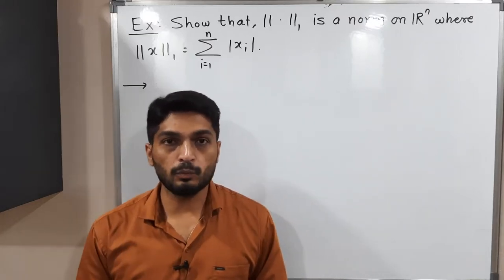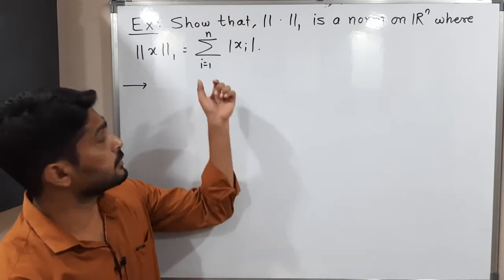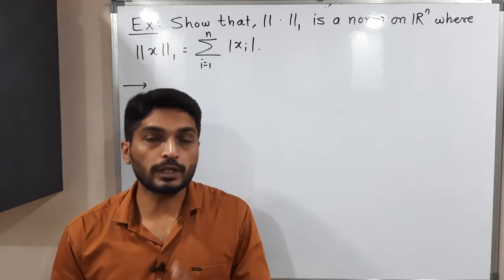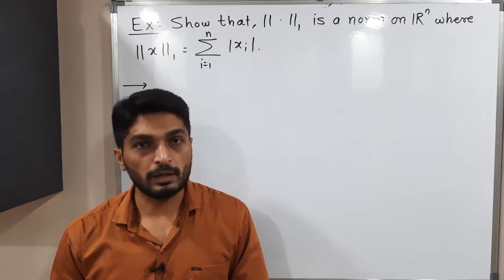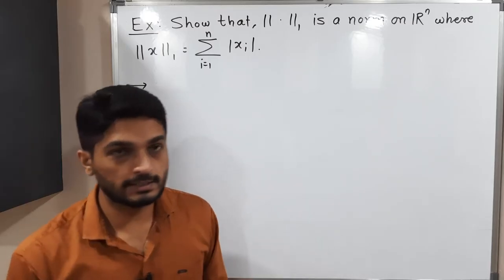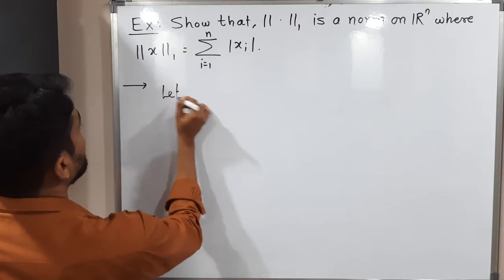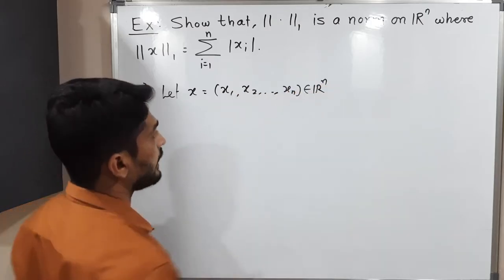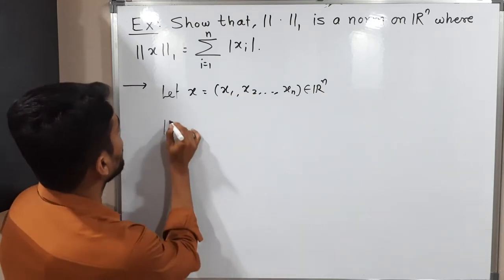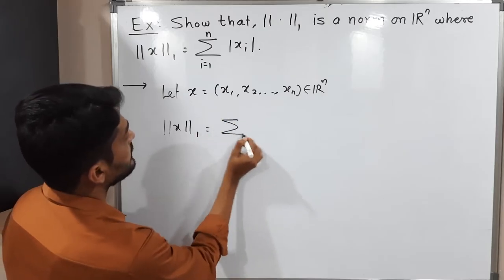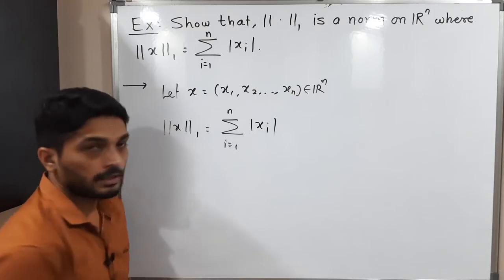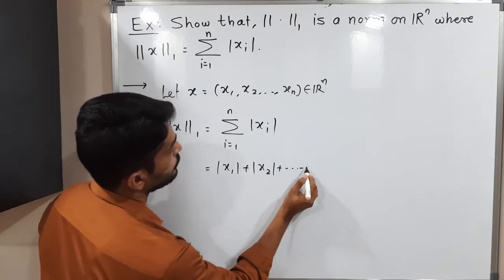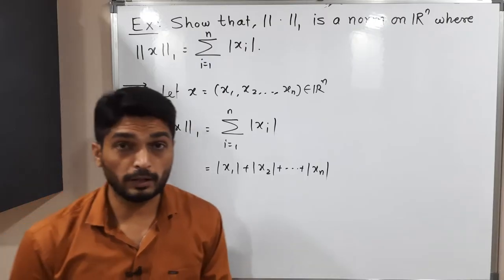Let us discuss this example. We have norm 1 which is defined on elements of ℝⁿ, and we have to prove it is a norm on ℝⁿ — that means it should satisfy four conditions. The definition of norm 1: for x = (x₁, x₂, ..., xₙ) ∈ ℝⁿ, norm₁(x) is defined as the summation from i=1 to n of |xᵢ|, which expands to |x₁| + |x₂| + ... + |xₙ|.